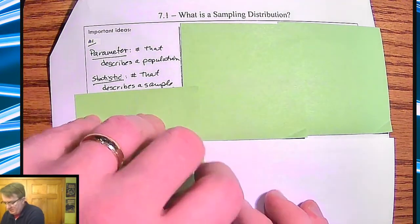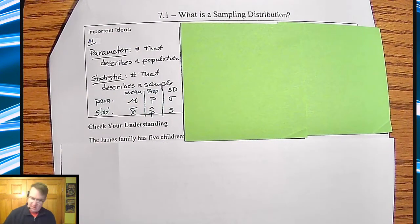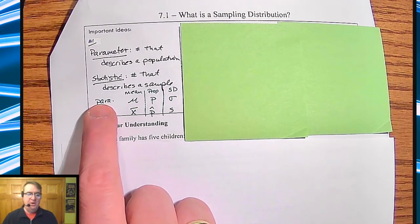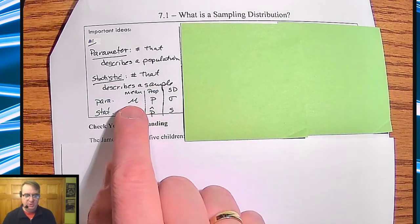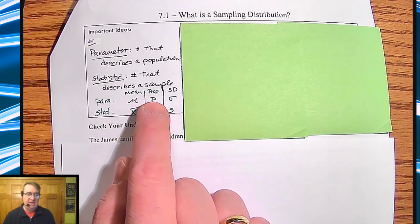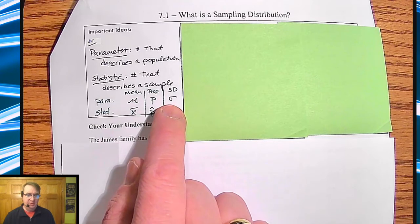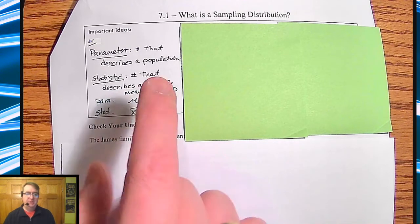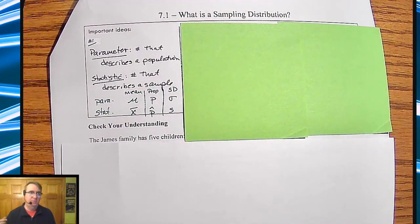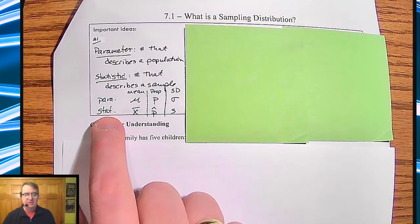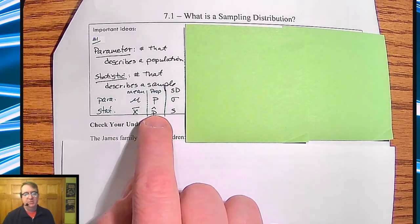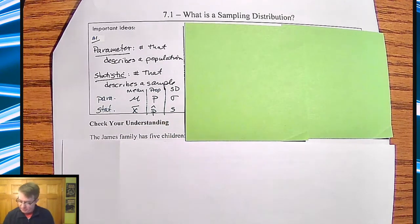Now, this is going to be something that's really important that sometimes people tend to forget, and that is what the symbols end up meaning. So over here, if you have a parameter, so we're talking about the population, we are going to go through and talk about mu, we're going to talk about P, and we're going to talk about sigma. Sigma is standard deviation, mu is mean, P is for proportions. If you're talking about the statistics, then we're going to do x bar for mean, we're going to do little s for standard deviation, then we're going to do P hat for the population proportion.